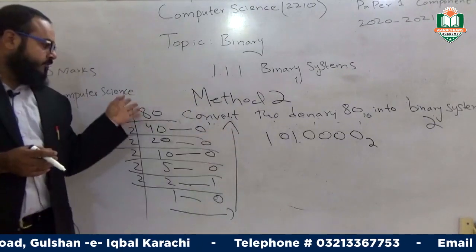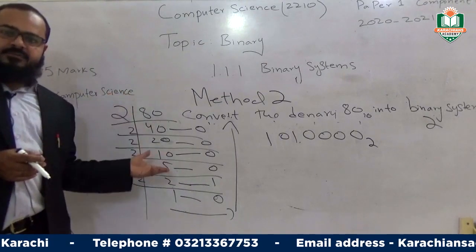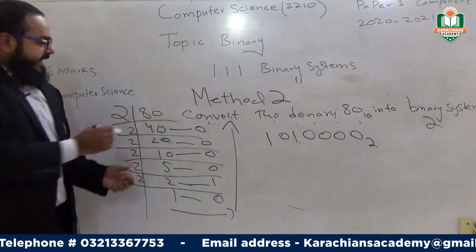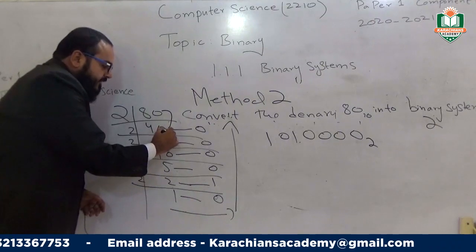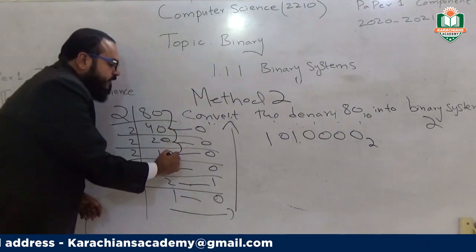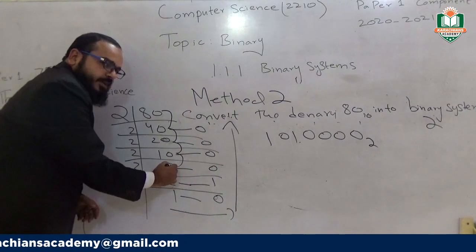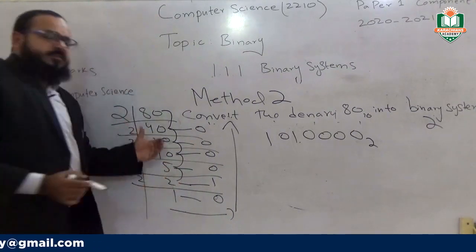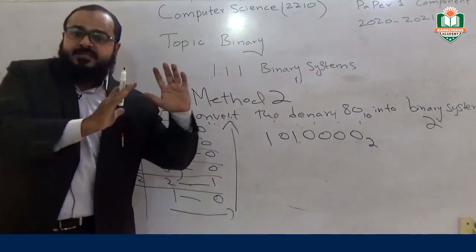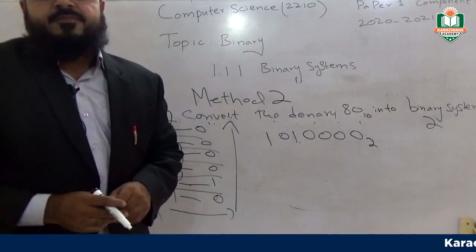In Method 2, the value halves at each step. If the first step is 100, the second step is 50, and so on, the value keeps decreasing by half. Both methods are approved by the examiner, so you can use whichever you prefer.